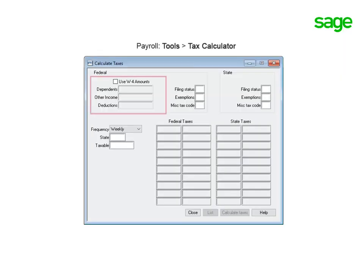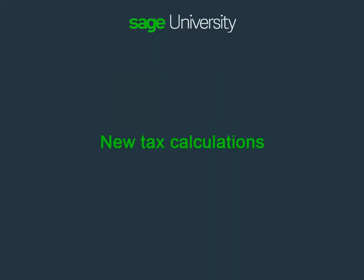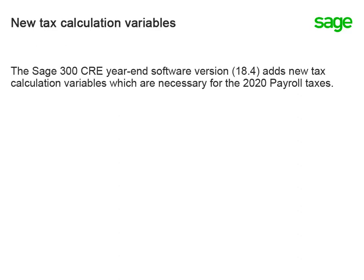The Payroll Tax Calculator window is also updated to show these new fields to match the changes on the W-4. When you upgrade to version 18.4 or higher, two new tax calculation variables are added in the software: Use W-4 Amounts and W-4 Amounts. These tax calculation variables are needed for the 2020 payroll taxes.